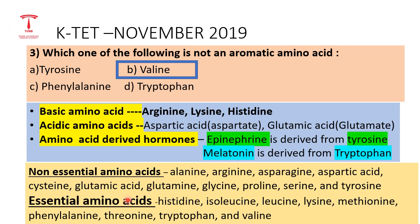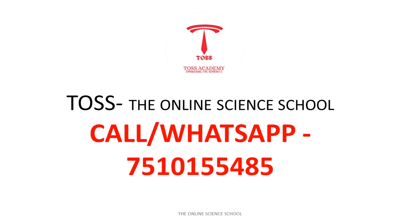Essential amino acids — which must be obtained from diet — include Histidine, Isoleucine, Leucine, Methionine, Phenylalanine, Threonine, Tryptophan, and Valine. This is a very common exam topic. Thank you.